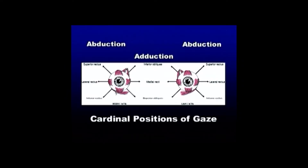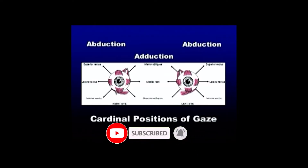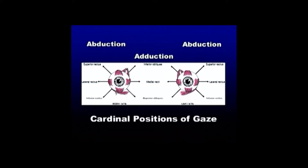The oblique muscles are tested in ADduction — that's where the eyes turn medial toward the nose — to maximize their vertical action. In contrast, the vertical recti muscles are tested in ABduction, where the eyes turn laterally. In these positions, the superior rectus muscle acts as a pure elevator, and the inferior rectus acts as a pure depressor.